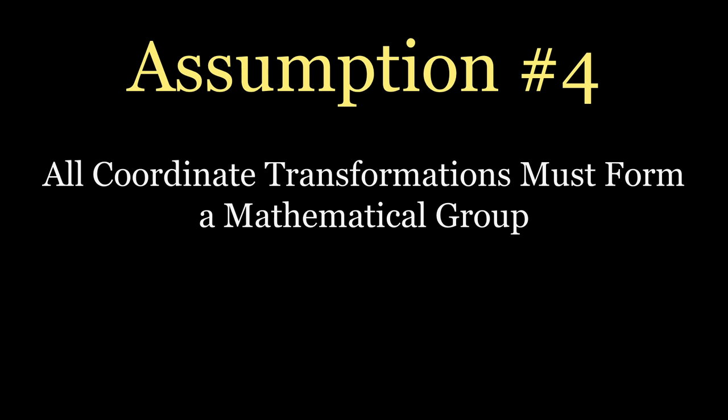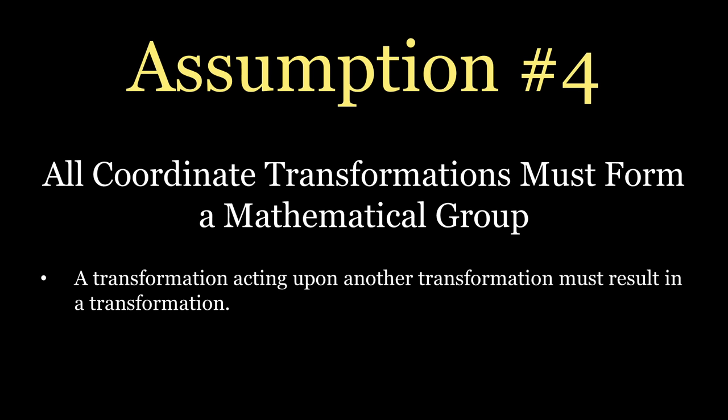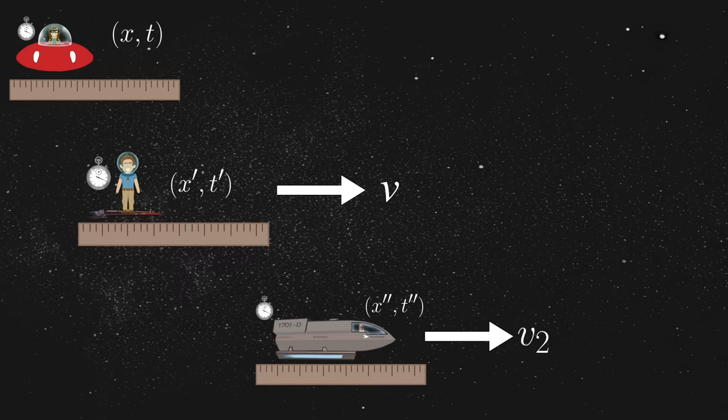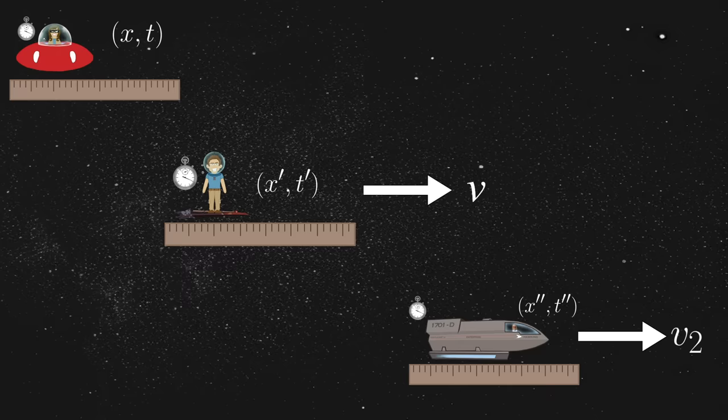We are now ready to introduce a fourth assumption into our hypothetical universe. All coordinate transformations must form a mathematical group. For those of you unfamiliar with group theory, this may sound a little strange, but I promise it's actually perfectly sensible. In this case, all it says is that a transformation acting upon another transformation must likewise be a transformation. Here is how it works. Suppose a third observer, whom we'll call Carl, happens to pass on by.